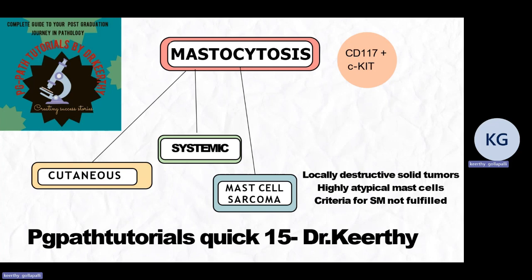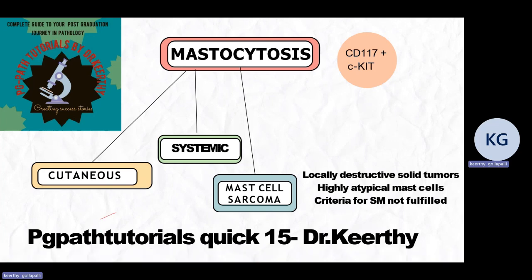Mastocytosis occurs when mast cells acquire a mutation in CD117 and C-kit, leading to excessive proliferation of mast cells. Mastocytosis is classified as cutaneous, systemic, and mast cell sarcoma. Mast cell sarcoma is a locally destructive solid tumor where you will see lots of typical mast cells, and it should not fulfill the criteria for systemic mastocytosis.